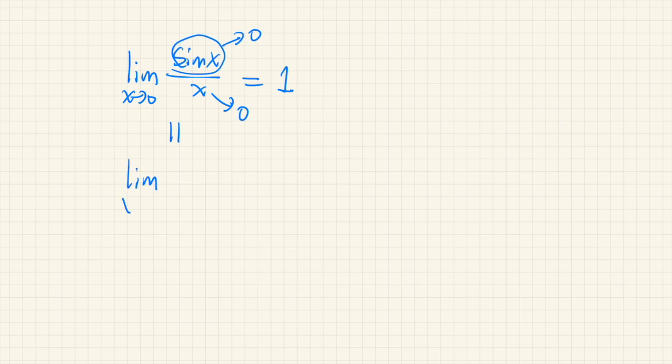If we differentiate both numerator and denominator, we get cos x in the numerator and 1 in the denominator. So it's easy to see that this converges to 1.